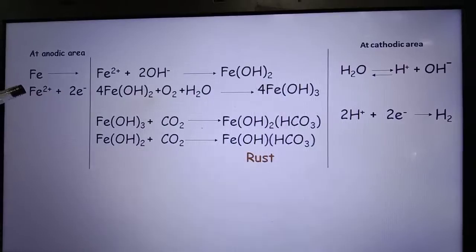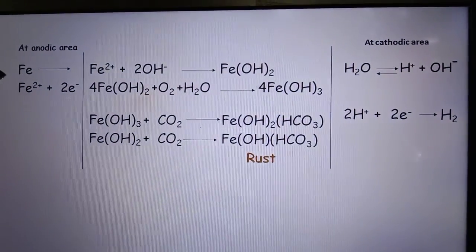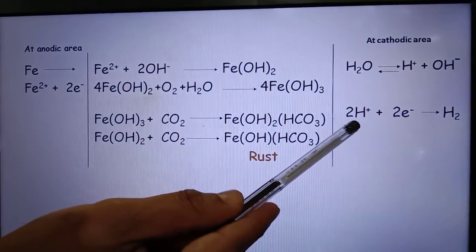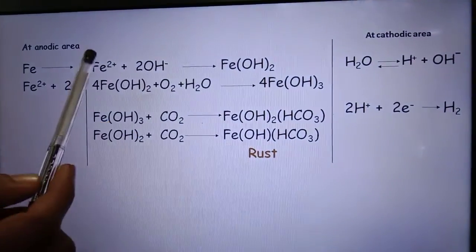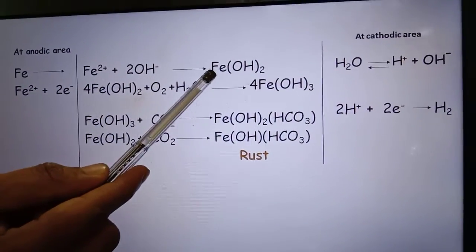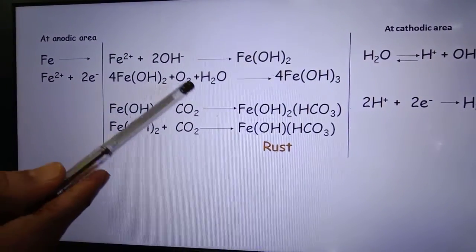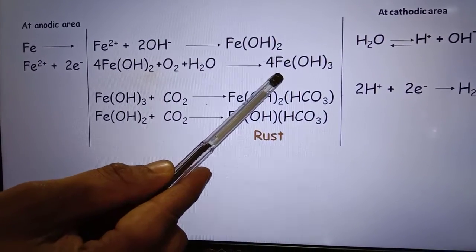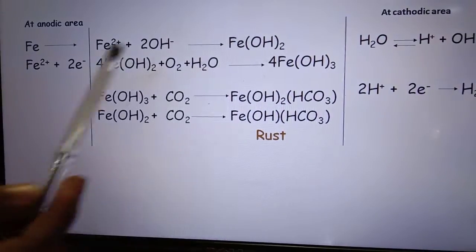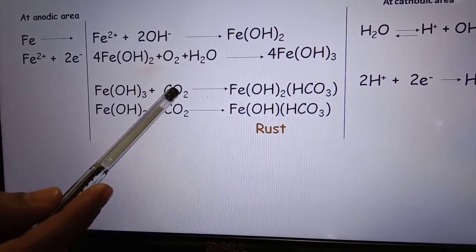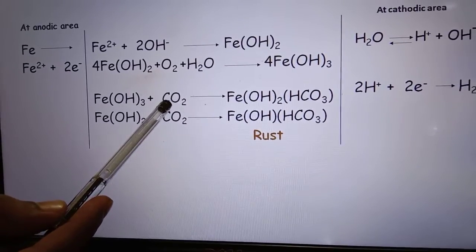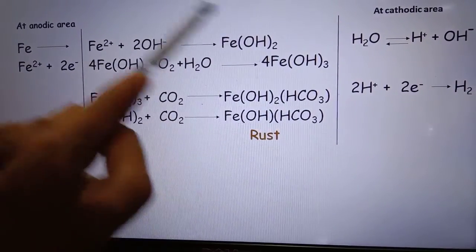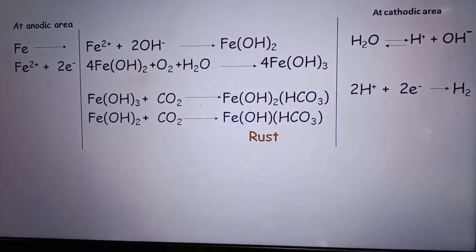At the anodic area, Fe oxidizes to Fe2+ and two electrons. At the cathodic area, water dissociates first, then H+ converts to H2. The Fe2+ and OH− ions form ferrous hydroxide, which then oxidizes in the presence of air and oxygen into ferric hydroxide — the brown color of rust is because of this. Fe2+ also reacts with CO2 present in the atmosphere to form carbonate species. These are basically the products present in rust. This is the electrochemical theory of corrosion.